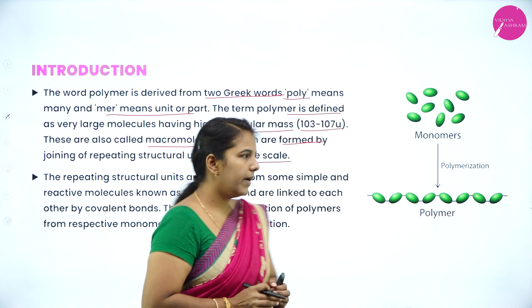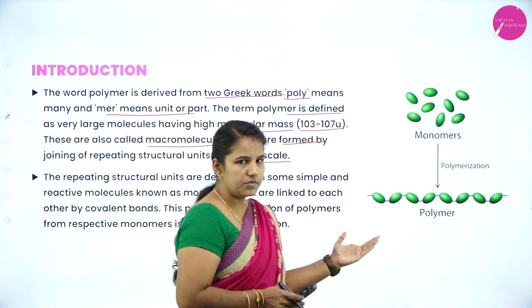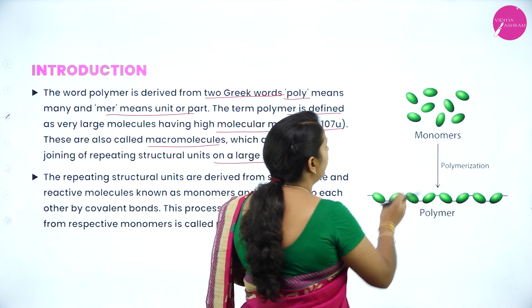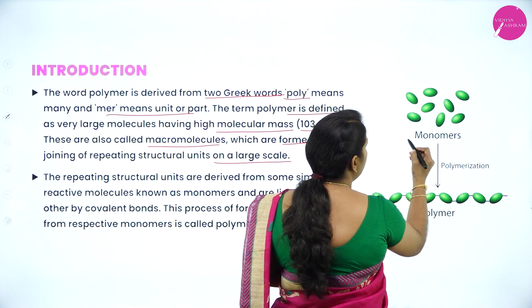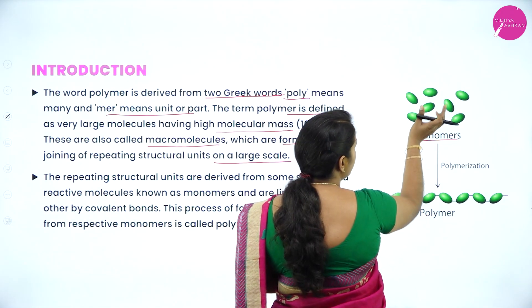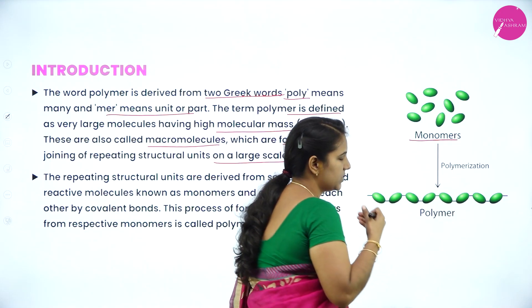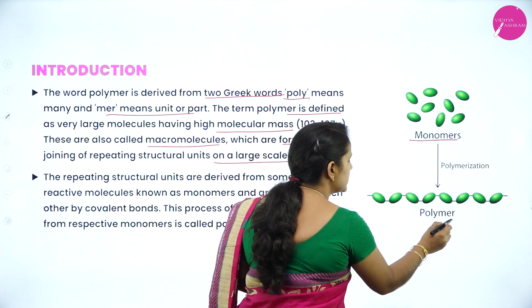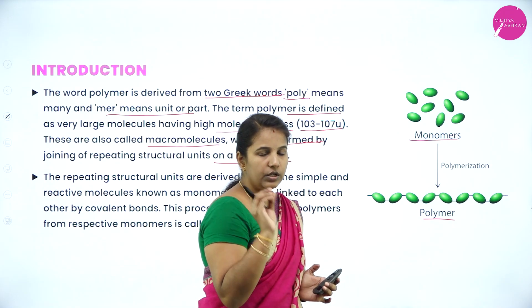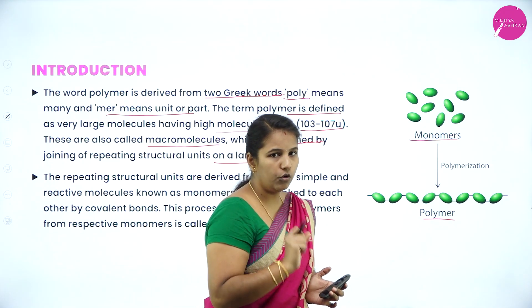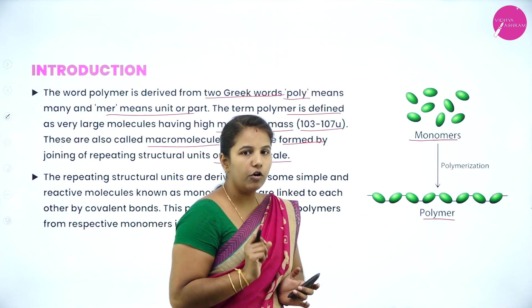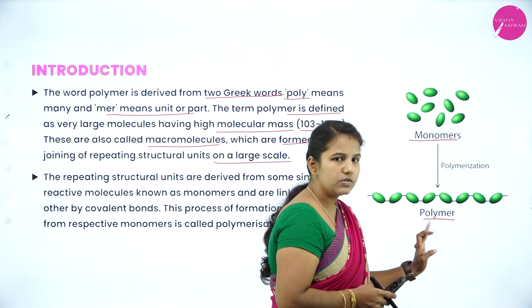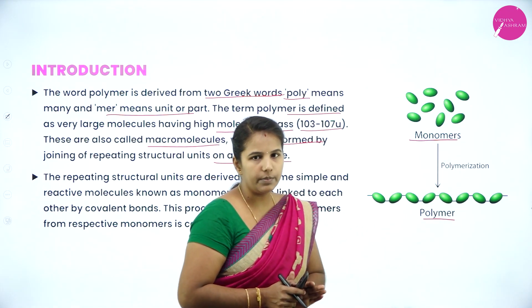You can understand this by looking at the diagrams. Polymers are obtained from the simplest molecules called monomers. When monomers join together, they can form a straight chain, branched chain, or cross-linked chain — what we call a polymer. Each single unit is called a monomer. They combine to form a large molecule called a polymer, and this process is called polymerization.